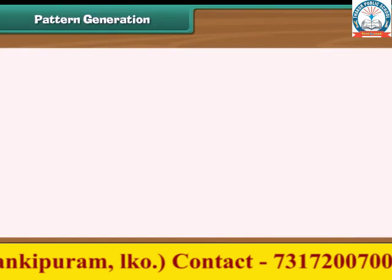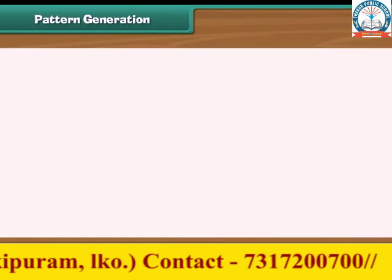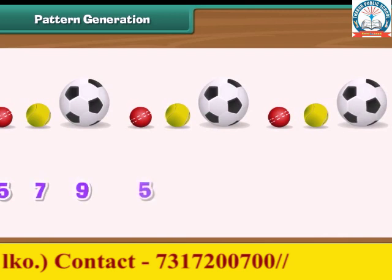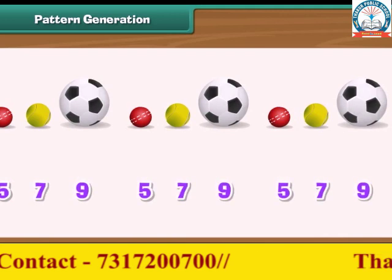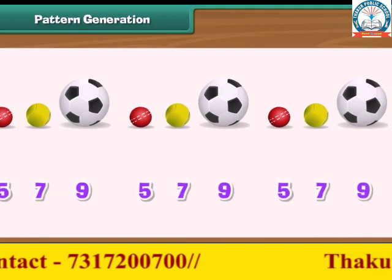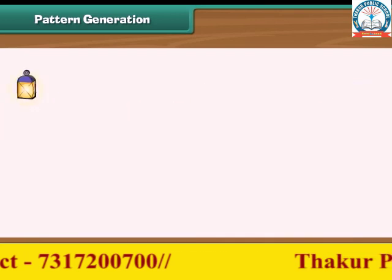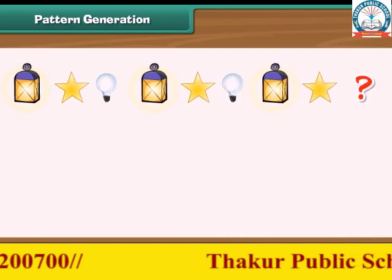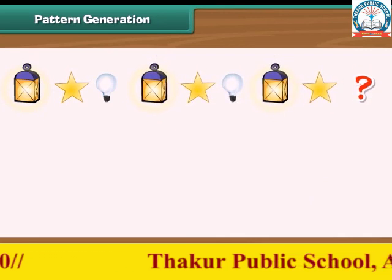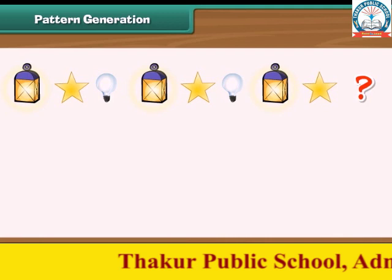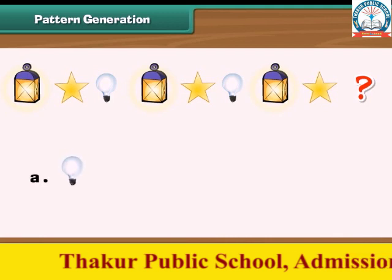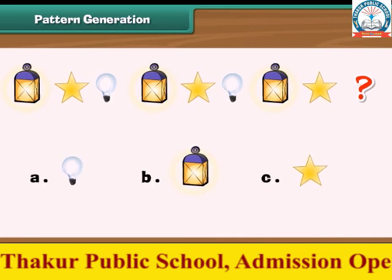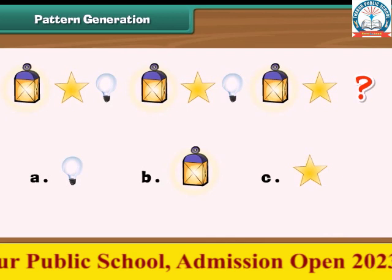Pattern generation. A pattern is a series of objects or numbers which repeat in a pre-decided manner. Look at the given pattern and guess the next picture required to complete it. There are three objects in the pattern, and they appear in a particular sequence.